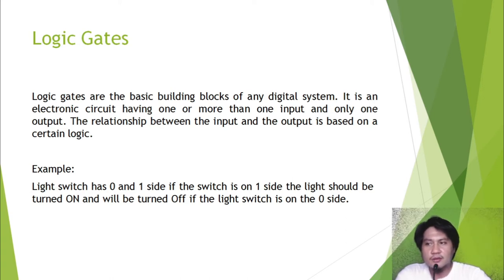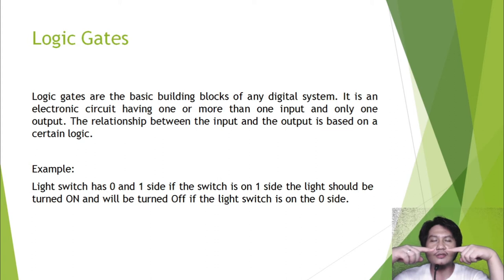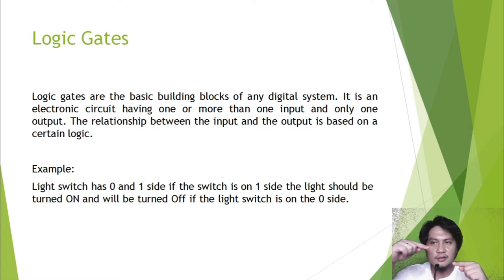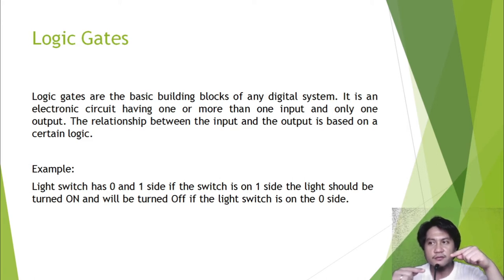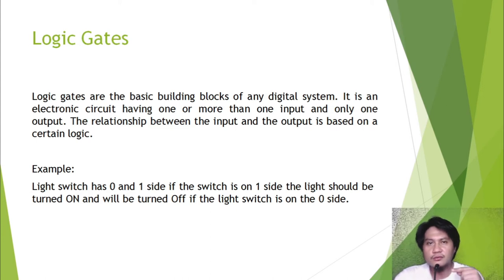Imagine the switch: if zero is on the upper part and one is on the lower part, the light is on. But if we flip it so one is on the upper part and zero is on the lower part, the light is off. So those are the two conditions — if one is down, the light is on; if zero is down, the light is off. That is the basic example of a logic gate.